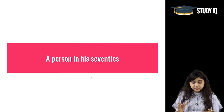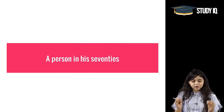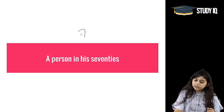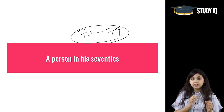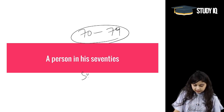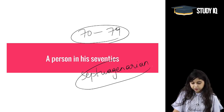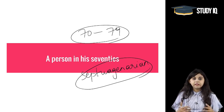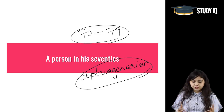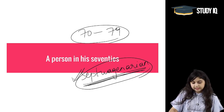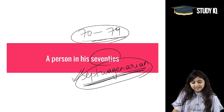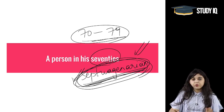A person in his 70s is called a 'septuagenarian.' So a person who is between 70 and 79 years old — we use the word septuagenarian. For example: my grandfather is currently in his septuagenarian age.